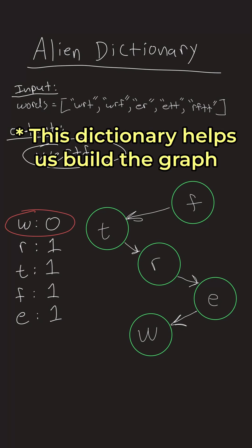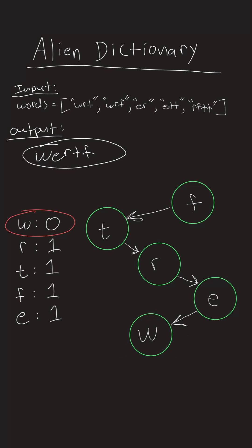Next, create a degree dictionary to track how many edges point to each node. Nodes with no incoming edges are our starting points.